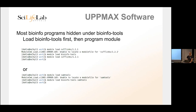In physics they have maybe four softwares and get a new version every other year. In bioinformatics we have hundreds of programs, all releasing new versions every month. Physics users were upset when they typed 'module avail' and could only see bioinformatics programs — a big wall of text. So we hid all bioinformatics software underneath a meta-module. Before you can load any bioinformatics program, you have to first load the bioinfo-tools module.